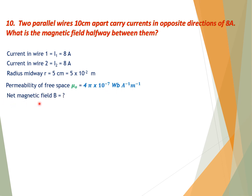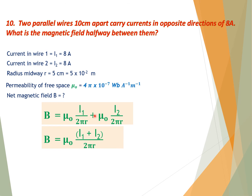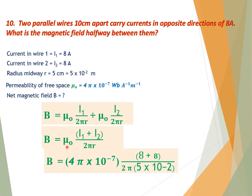We need to calculate the net magnetic field. Using B = μ₀I₁ / (2πr) + μ₀I₂ / (2πr), we add the magnetic fields of both wires. Taking μ₀ / (2πr) as common: B_net = (μ₀ / 2πr)(I₁ + I₂). Putting in all values and solving, the net magnetic field B = 6.4×10⁻⁵ tesla. This is the magnetic field halfway between the two parallel wires.